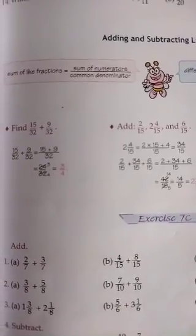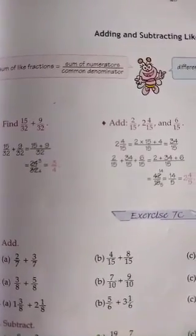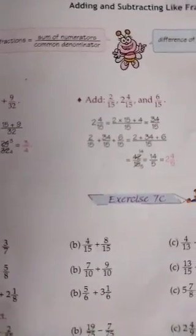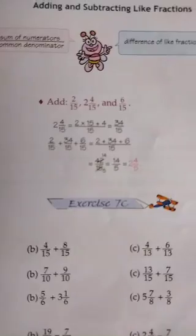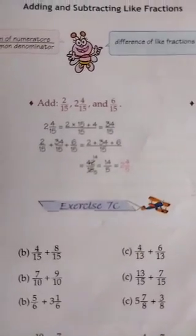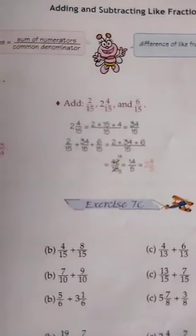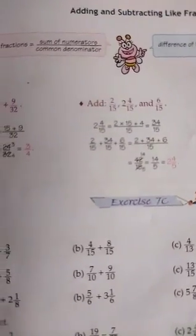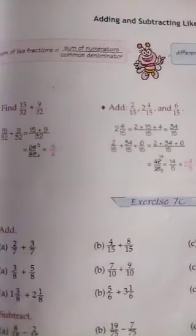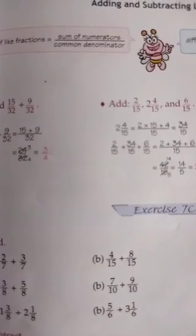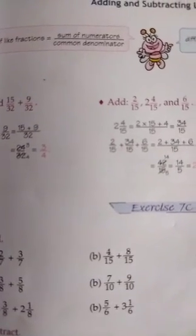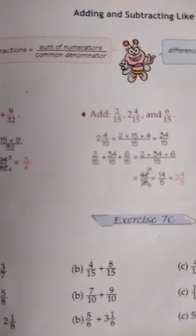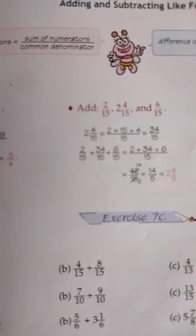Question numbers 1, 2, and 3 are all done in the same way as I explained in question 2a. In all these questions you just add the numerators and write the denominator once.